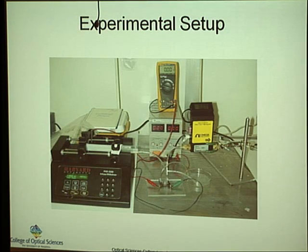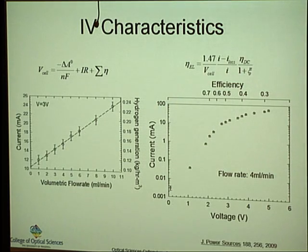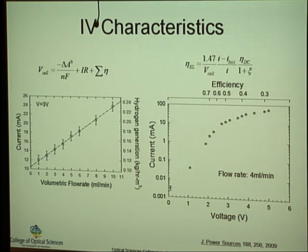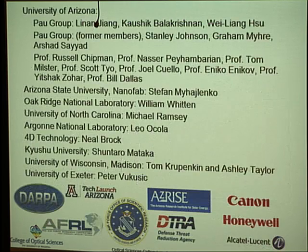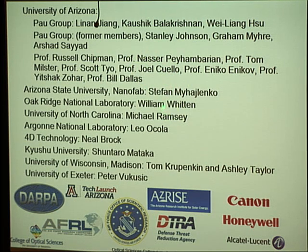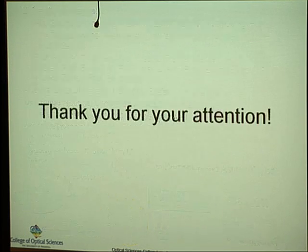We measured current, flow rate, and hydrogen generation for different voltages, achieving an efficiency of about 40%, which is not very good, but it's the first time anybody has done this type of chip-scale electrolyzer work. The flow rate and catalyst are not optimized, so there is room for improvement. I want to acknowledge the students and collaborators who did this work and the agencies that funded it. Thank you for your attention.